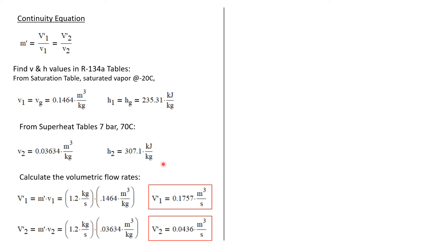Now we can calculate the volumetric flow rates. The volumetric flow rate is just the mass flow rate times the specific volume. The mass flow rate is 1.2 kilograms per second for both the inlet and the exit. But the specific volumes are different.